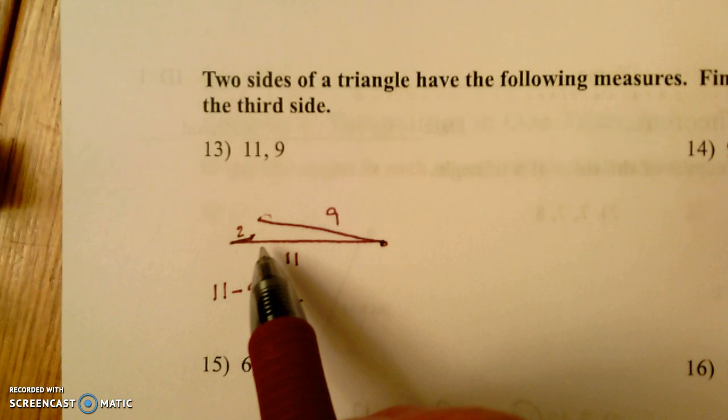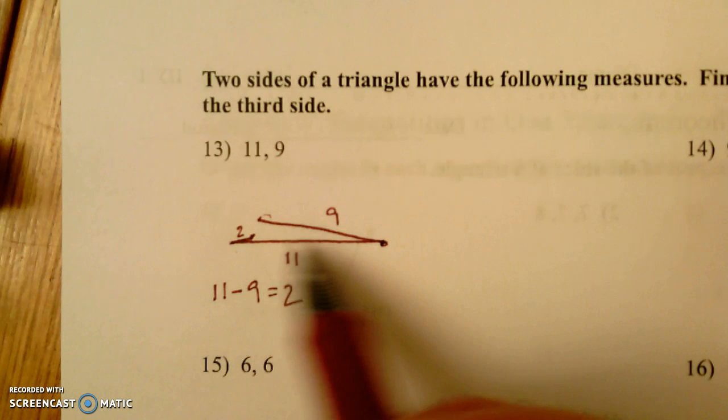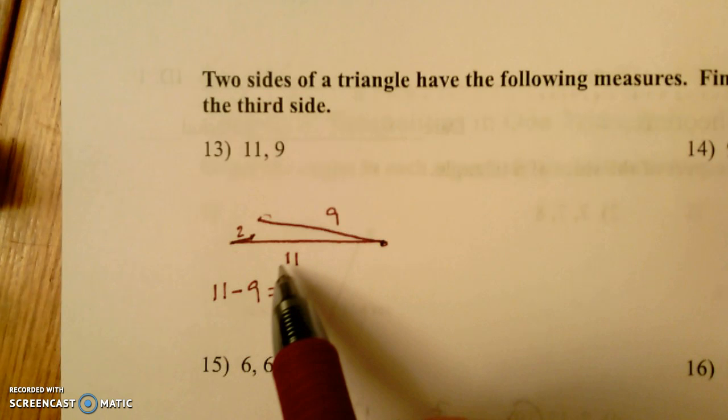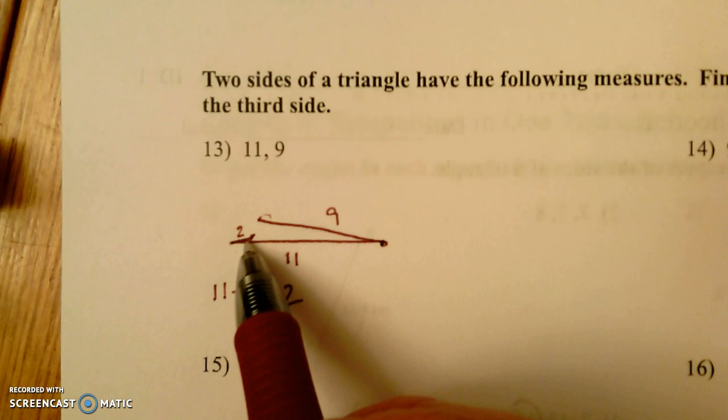Now of course that wouldn't actually be a triangle, so I shouldn't say at least two units. It would have to be more than two units, because if it were 9 and 2 exactly, they'd fold right in on the 11 and it would just be a straight line. So it'd have to be just a little more than two.